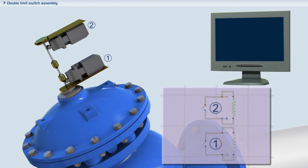The double limit switch assembly is equipped with two electric switches which send a signal to a control system when the Bermod 700 series valve is in the fully open position and when it's in the closed position.